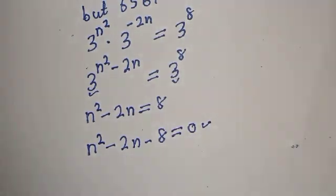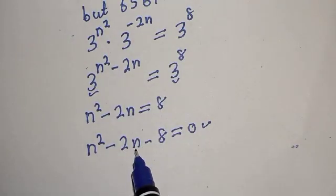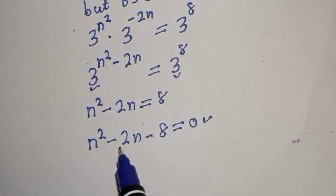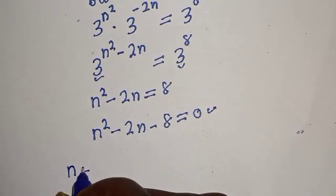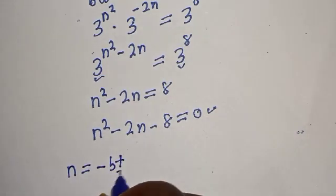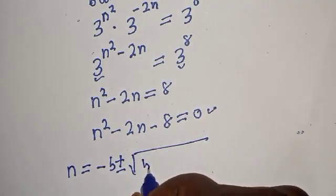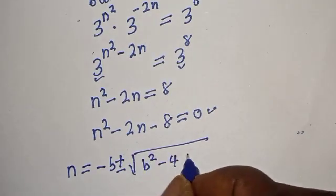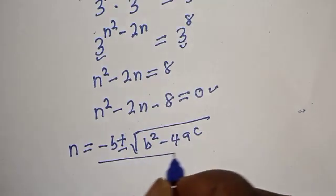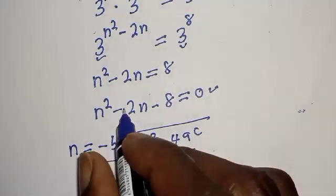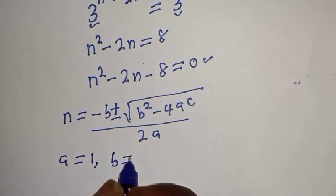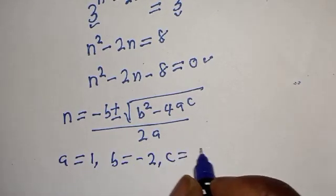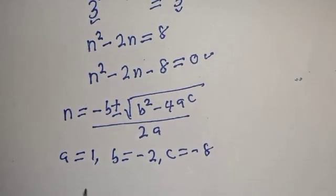This is a quadratic equation, which can be solved using the quadratic formula or factorization method. In this case, we will use the quadratic general formula: n equals minus b plus or minus square root of b squared minus 4ac, all over 2a. From this equation, a equals 1, b equals minus 2, and c equals minus 8.